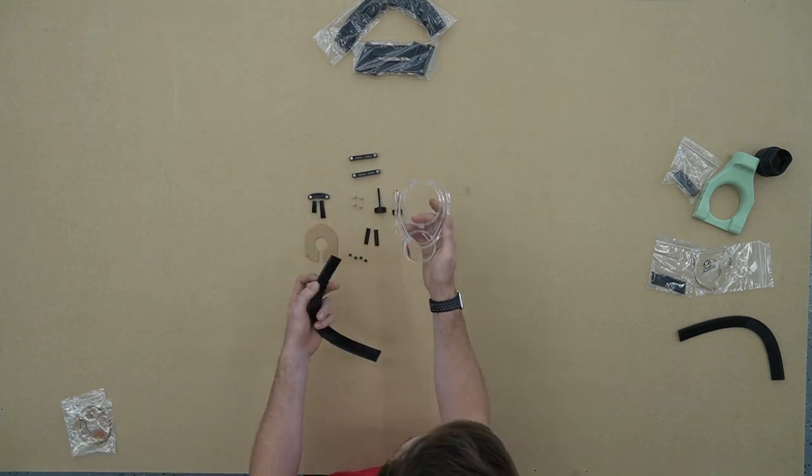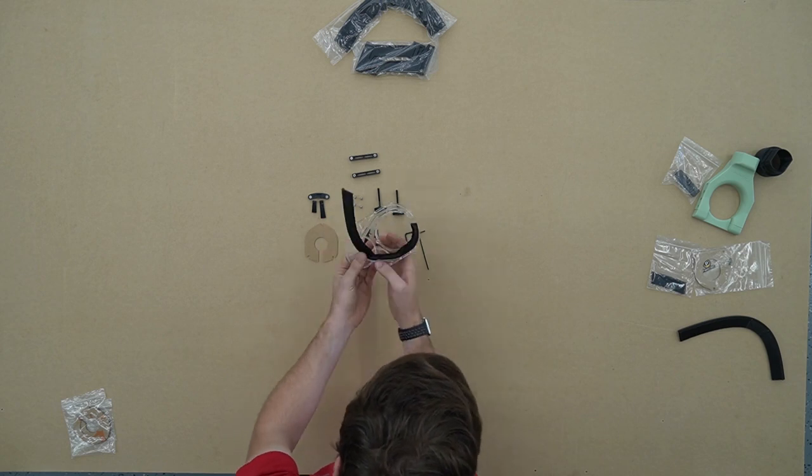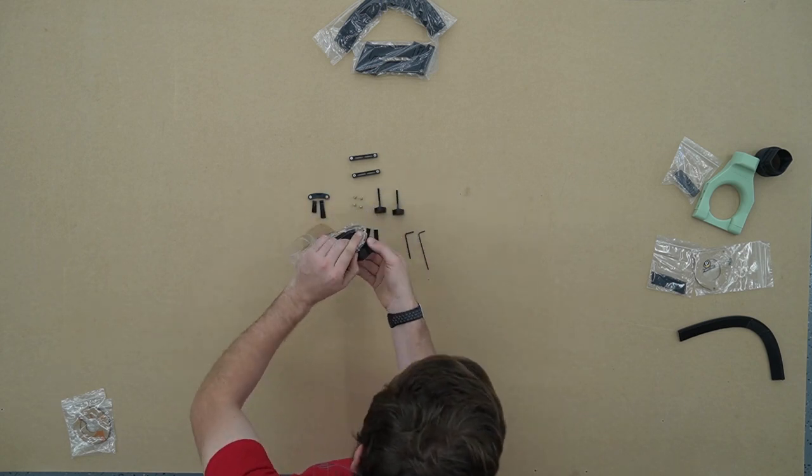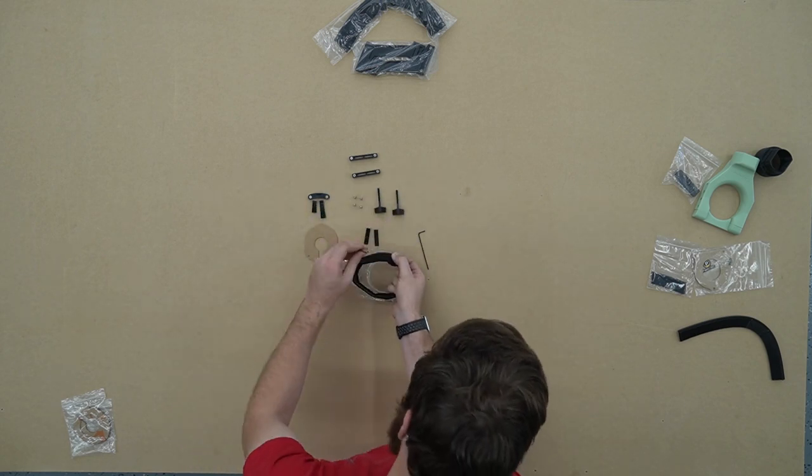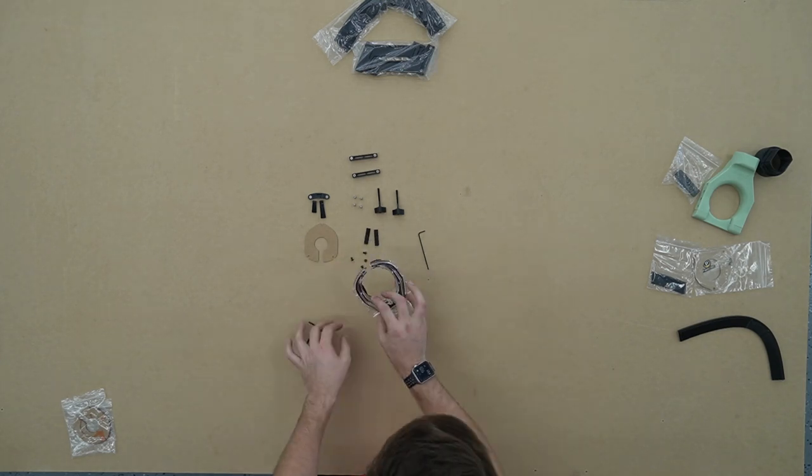Our first step is to insert our one inch brush into the channel on the bottom side of the Dust Boot. This takes a little bit of pressure since it is very tight so you might need to use an Allen key or screwdriver to kind of wedge it in there.